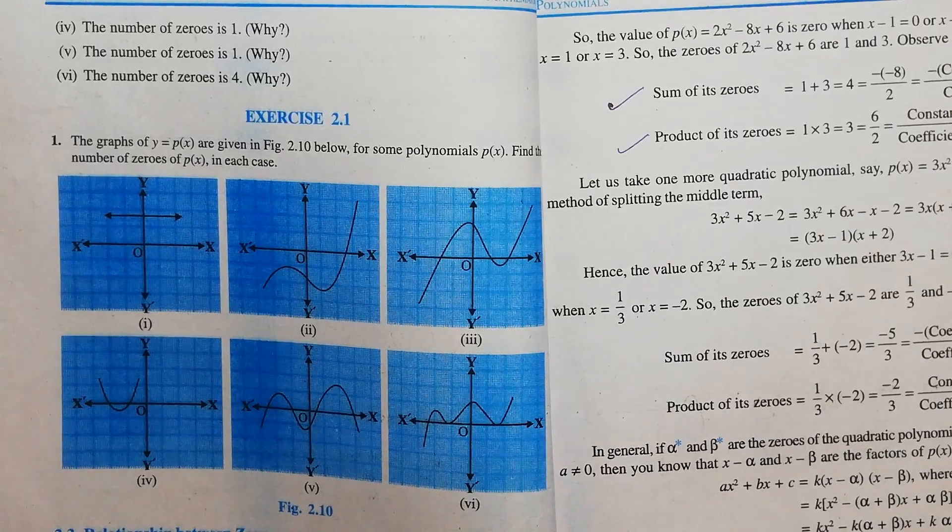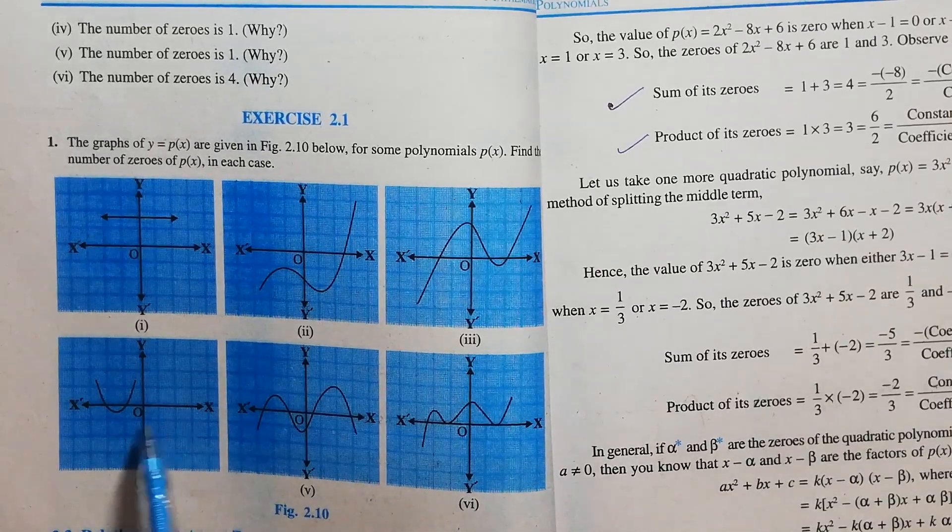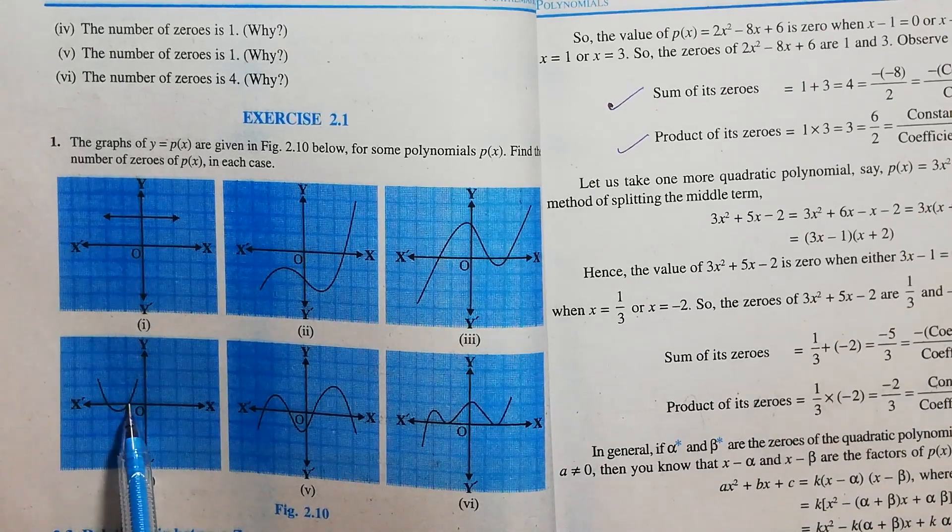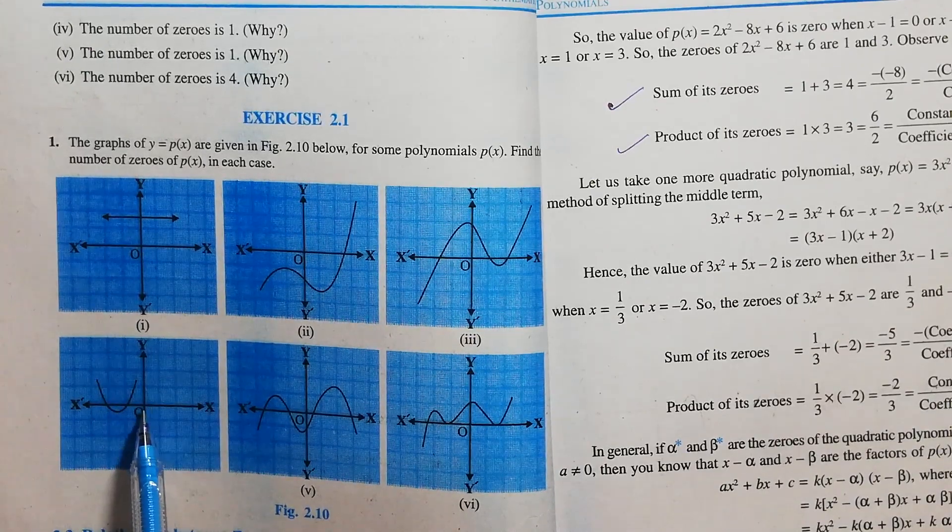Question number 4. In this graph, we can see that the graph intersects the x-axis at 2 points. So, the number of zeros equals 2.